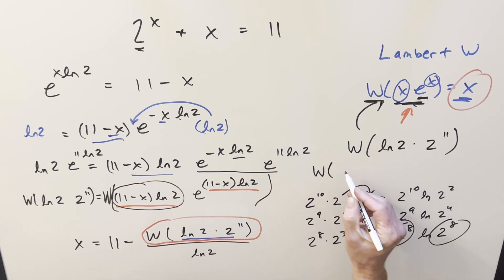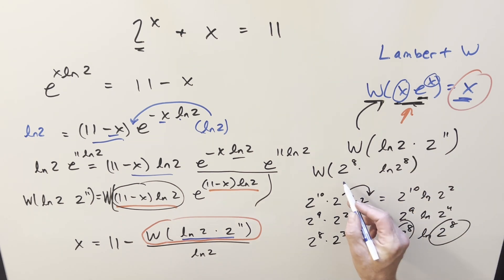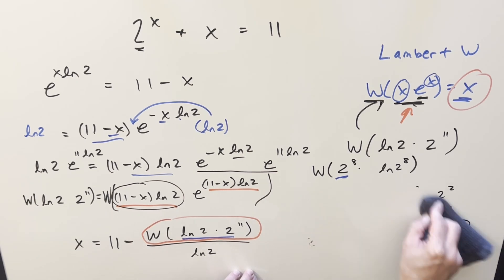Let's kind of reorder it. So we'll bring the 2 to the 11th in front and split it up as 2 to the 8 times 2 cubed or 8 ln 2. But bring this over into the exponent. But now here, I just want to take the 2 to the 8 and write it with e as the exponent. So when I do that, let's see what happens.